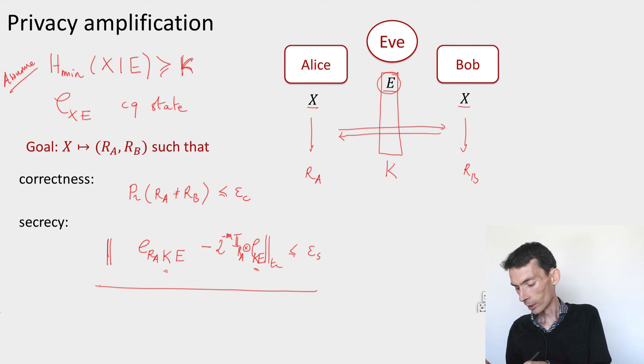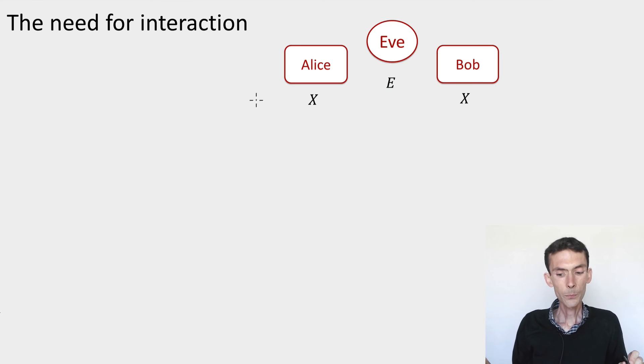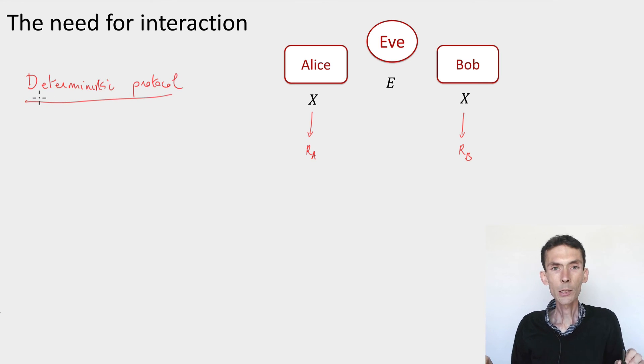Let me end this module by arguing that yes, the communication is needed. How do we see this? Well, let's assume that there is no communication. So Alice locally comes up with a string rA, Bob locally comes up with a string rB. Now, if we want these two strings to be equal, then it means that the process by which you construct r from x has to be deterministic. Suppose we have a deterministic protocol that somehow reduces the length of x in order to produce something that's independent of the eavesdropper. For instance, if the eavesdropper has the first bit, we could say, well, let's just drop the first bit. The problem is we don't know what information the eavesdropper has.